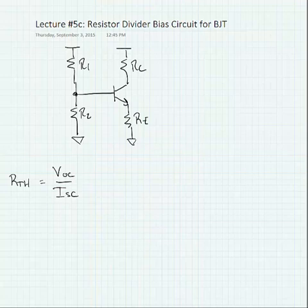In this lecture, we're going to look at the resistor-divider bias circuit for a bipolar junction transistor amplifier. This is one of the most common biasing schemes for a discrete bipolar amplifier. It involves using a voltage divider at the input.